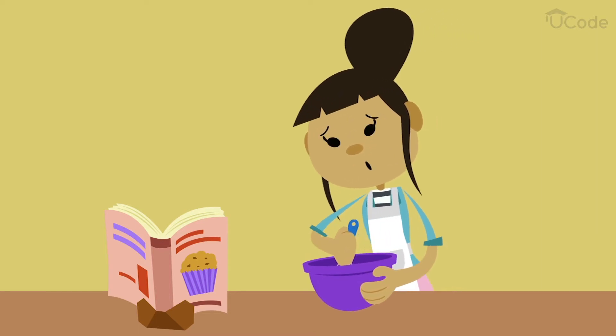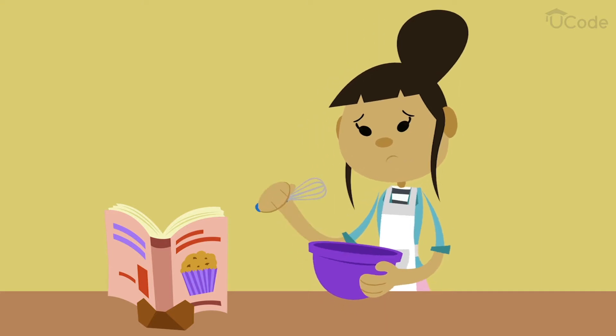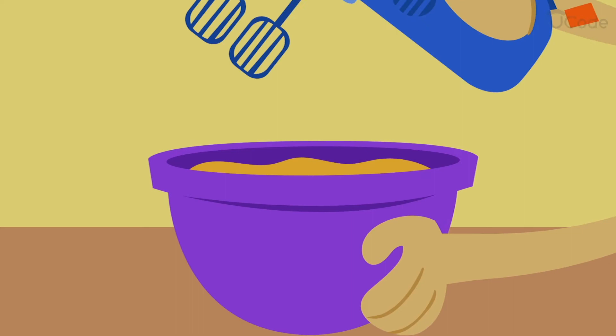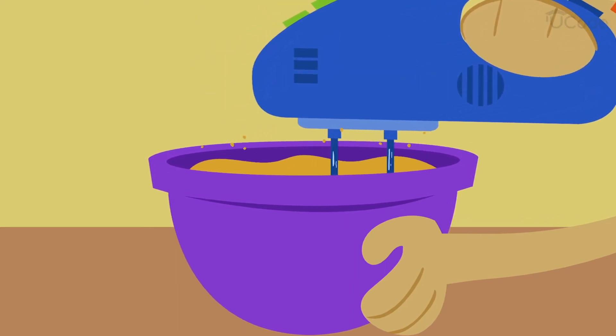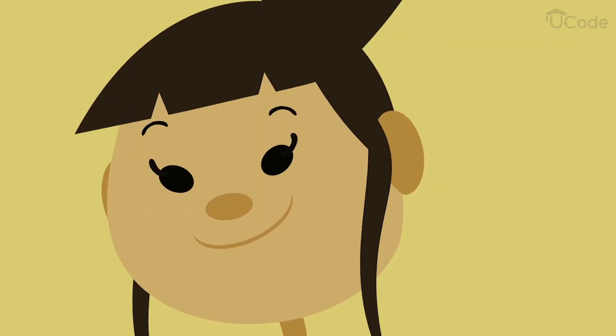If you had an electric mixer, however, you could simply place the bowl under the mixer and let it do the repetitive work of mixing the batter. It would certainly ease up the process.